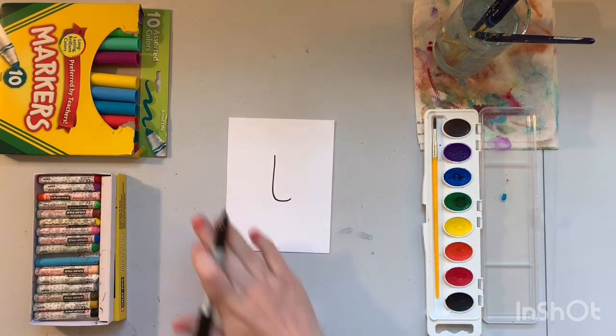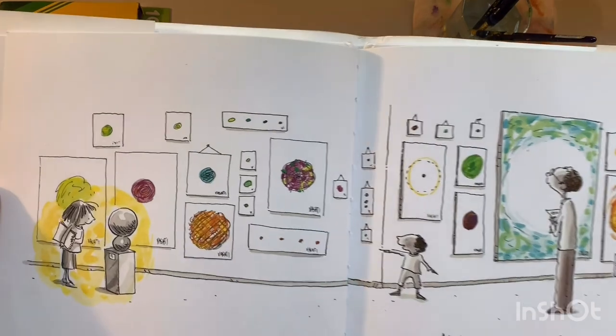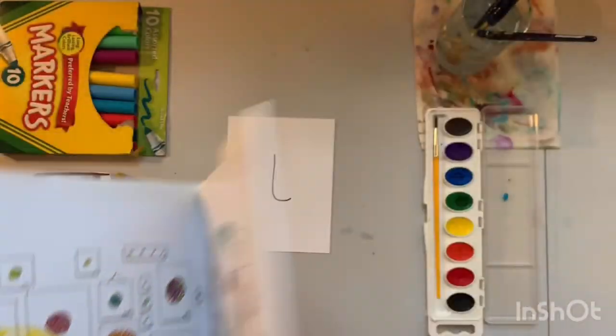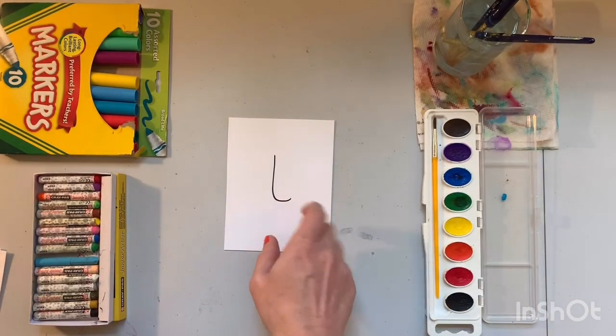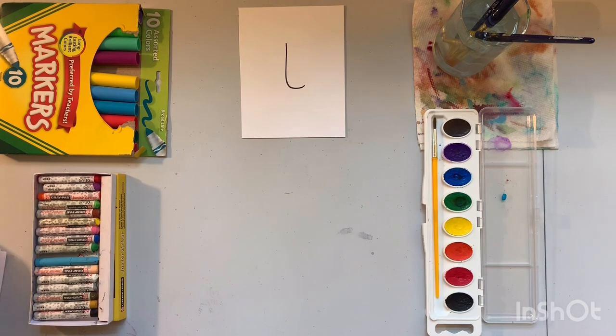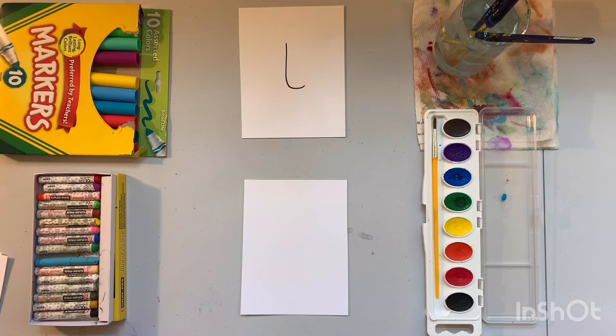So using this I am going to create a bunch of different versions of that shape just like Vashti made a bunch of different versions of her dot. So when she has her art show she used that dot to inspire all of these different types of artworks. So I'm going to do the same thing using my shape. So the first thing I'm going to do is start with another small piece of paper.